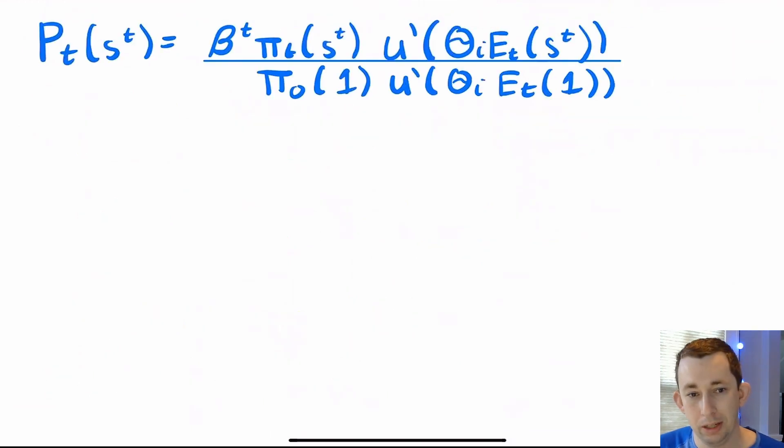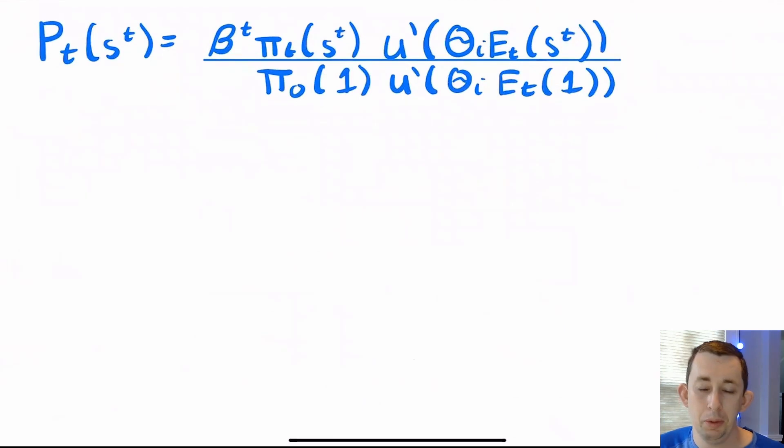And using that result that we just saw, we can plug that back in for the price. And instead of a c_t of s^t here, we're just going to get that theta_i aggregate endowment of a state. A couple of things I want us to look at at this price. Notice that we've got a ratio of probabilities between the probability today of a given event history and the probability or that 50% chance that in time zero, it's sunny. Notice that we've got marginal utilities, a ratio of marginal utility here. And notice that we've got our time discounting value beta to the t here.